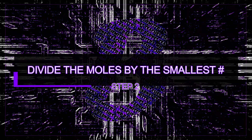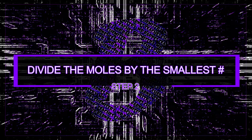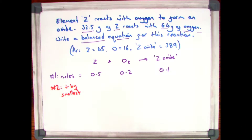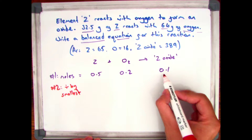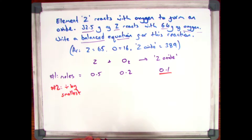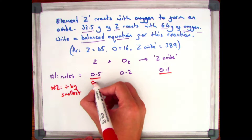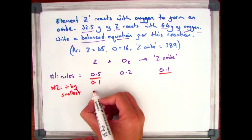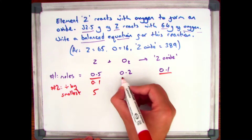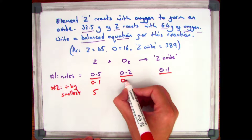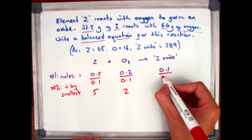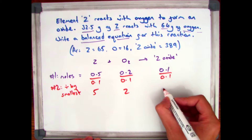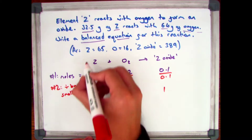Step two is to divide the moles by the smallest number, which in this case is 0.1. So I divide all three by 0.1: 0.5 divided by 0.1 gives me 5, 0.2 divided by 0.1 gives me 2, and 0.1 divided by 0.1 gives me 1.